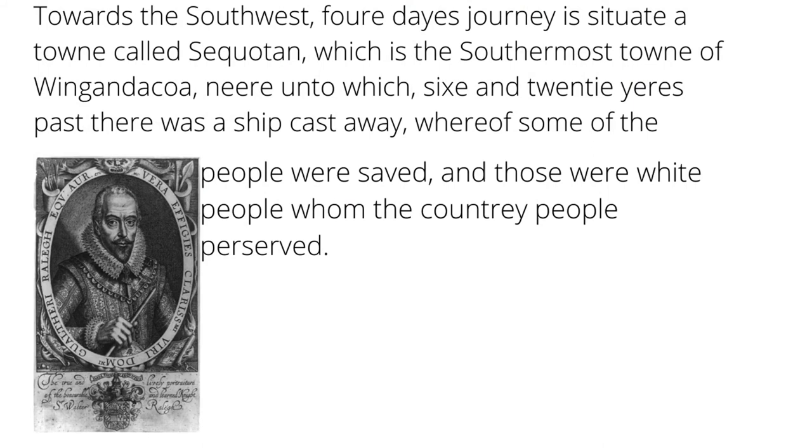Barlow goes on to mention that there are two other villages in the area that are allied with these natives but they are independently governed. And then he says something astounding about another tribe. Let's have a look. Towards the southwest four days journey is situated a town called Sekotan which is the southernmost town of Wingenkoa, near unto which six and twenty years past there was a ship cast away where of some of the people were saved and those were white people whom the country people preserved.